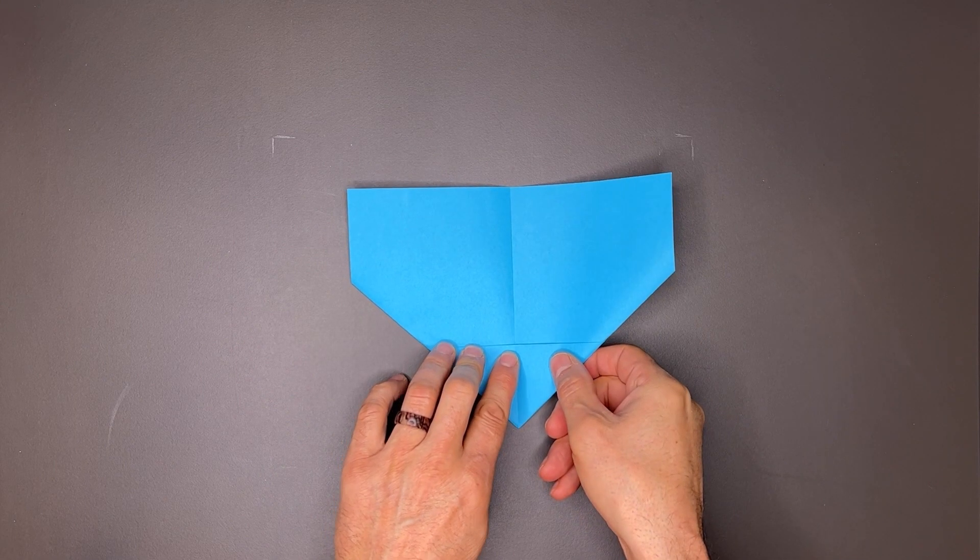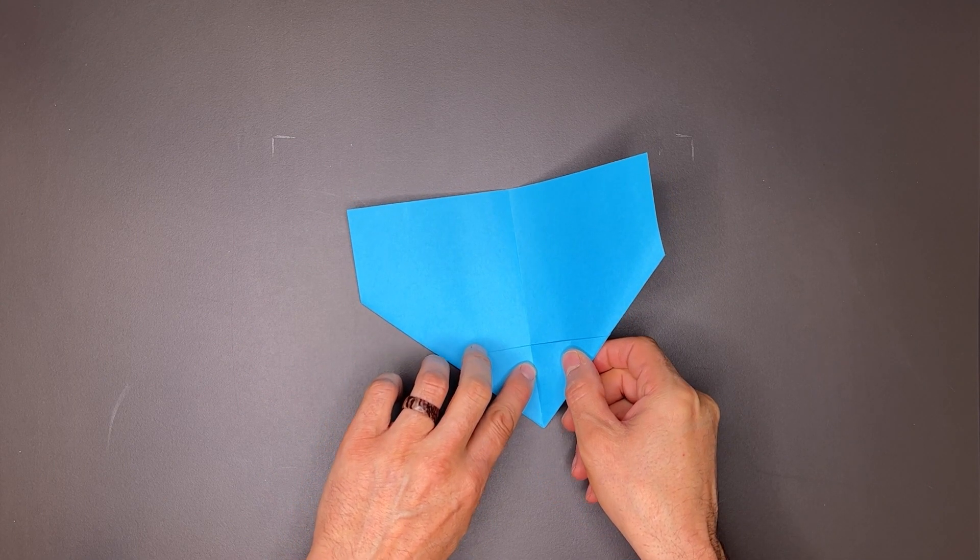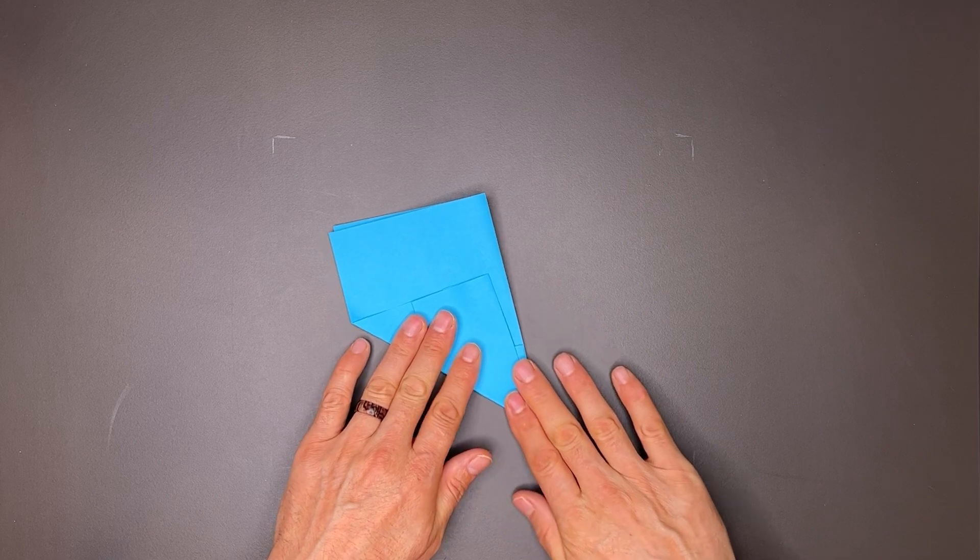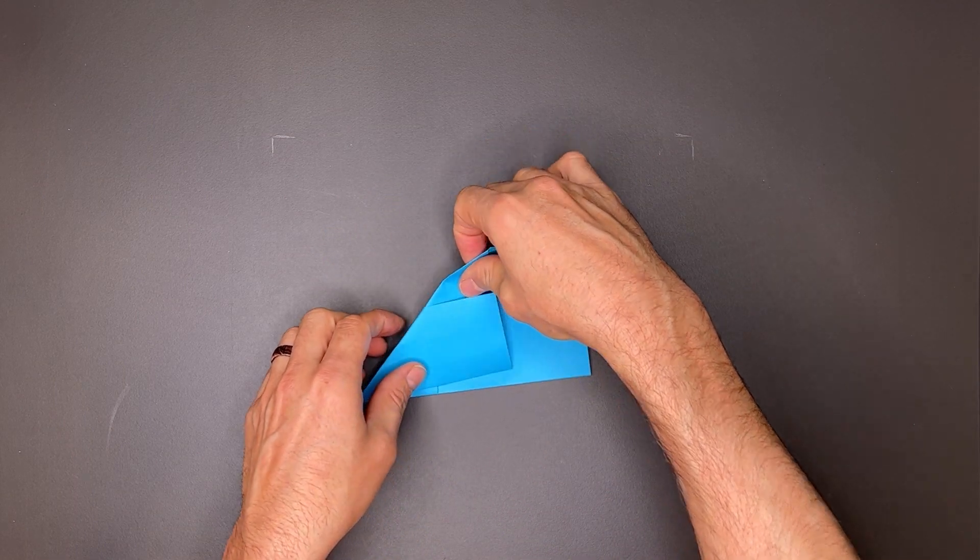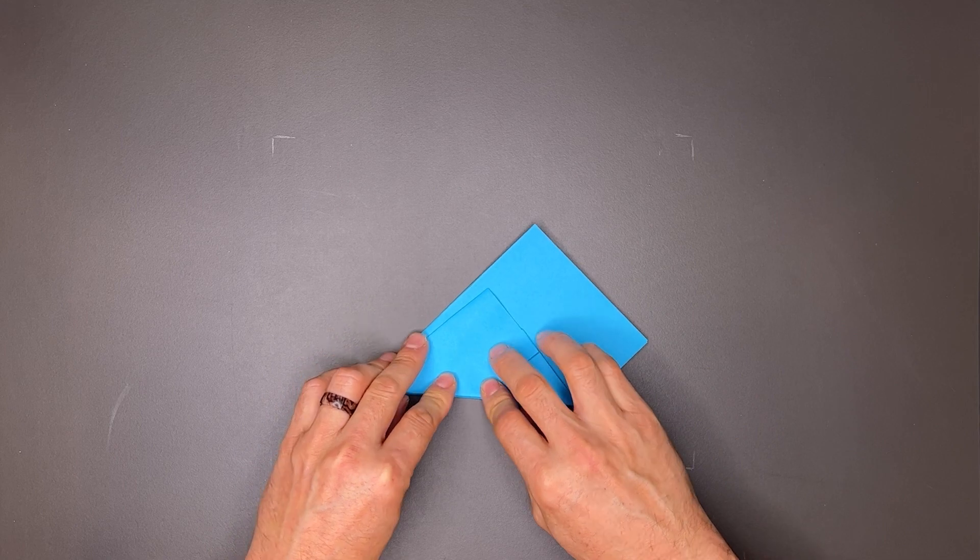Turn the paper over, and now we're just going to fold it right back on this valley crease we have here. Turn this over so I can see it a bit better.